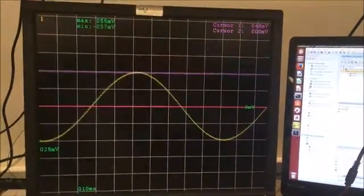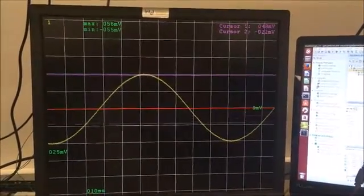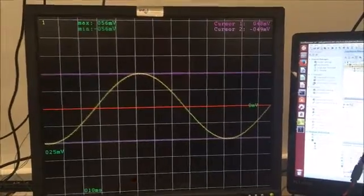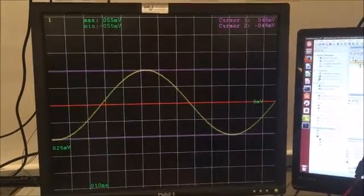And I can move cursor two down to the minimum of this sine wave. And there it is, cursor two at minus 49 millivolts.